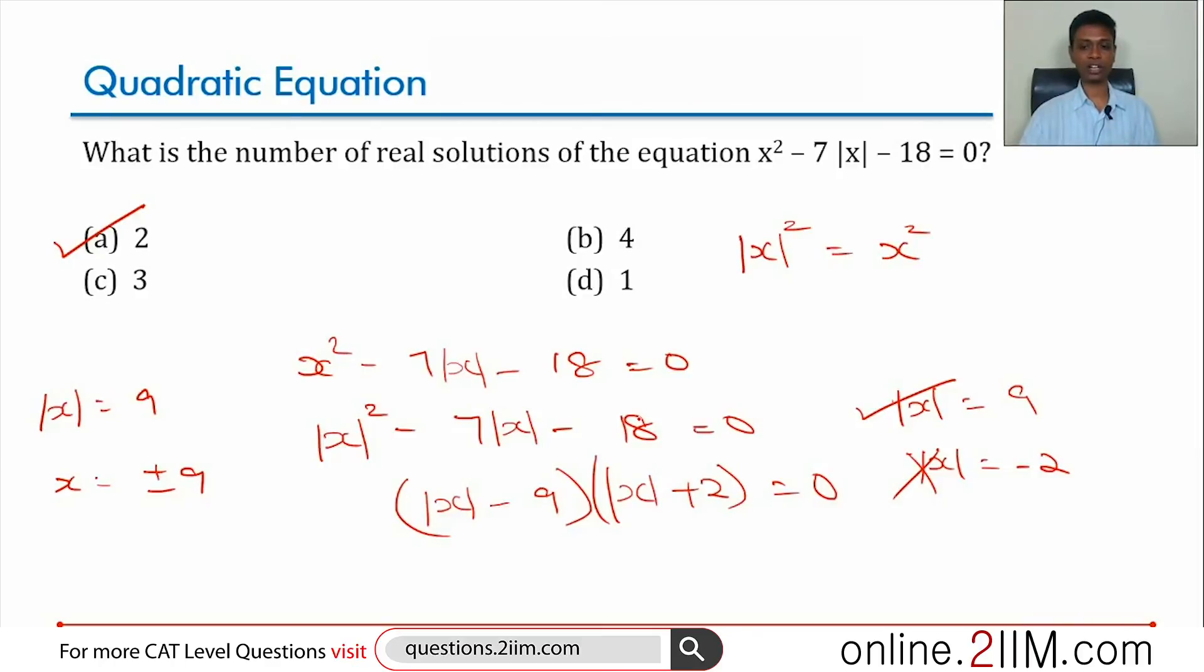So far simpler to treat this like a quadratic in mod x. Then straight away we get mod x equal to 9 as the only possible value, the other one not being valid. Therefore x can be plus 9 or minus 9.